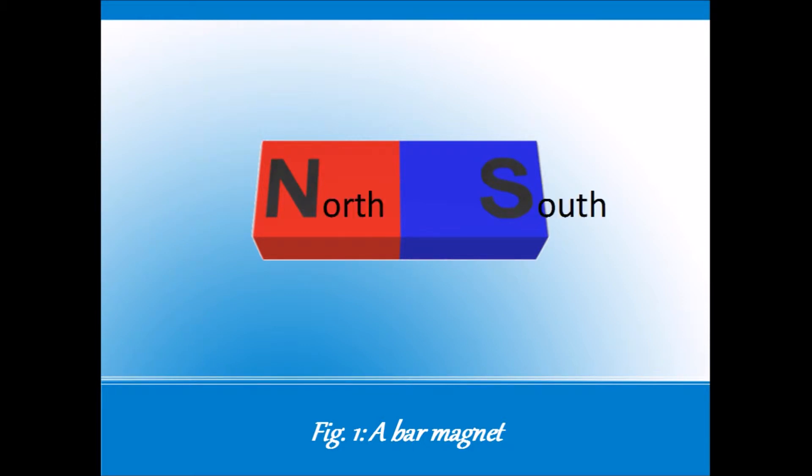These poles determine what magnets do around other objects. This one is called a permanent magnet because the poles never disappear or switch around. It always looks like this.